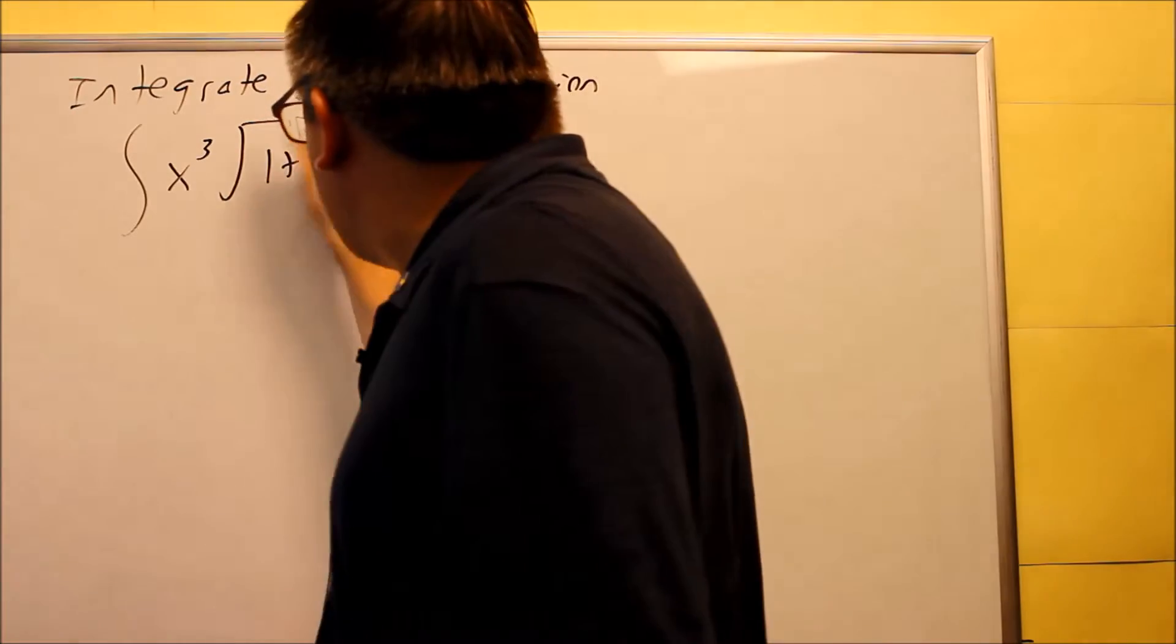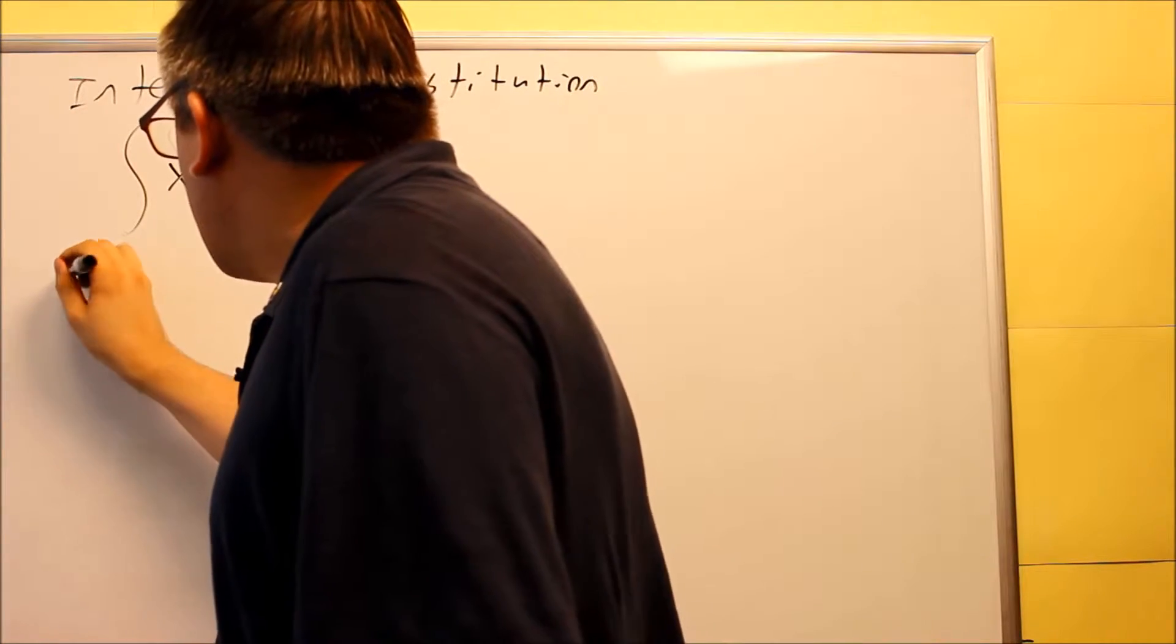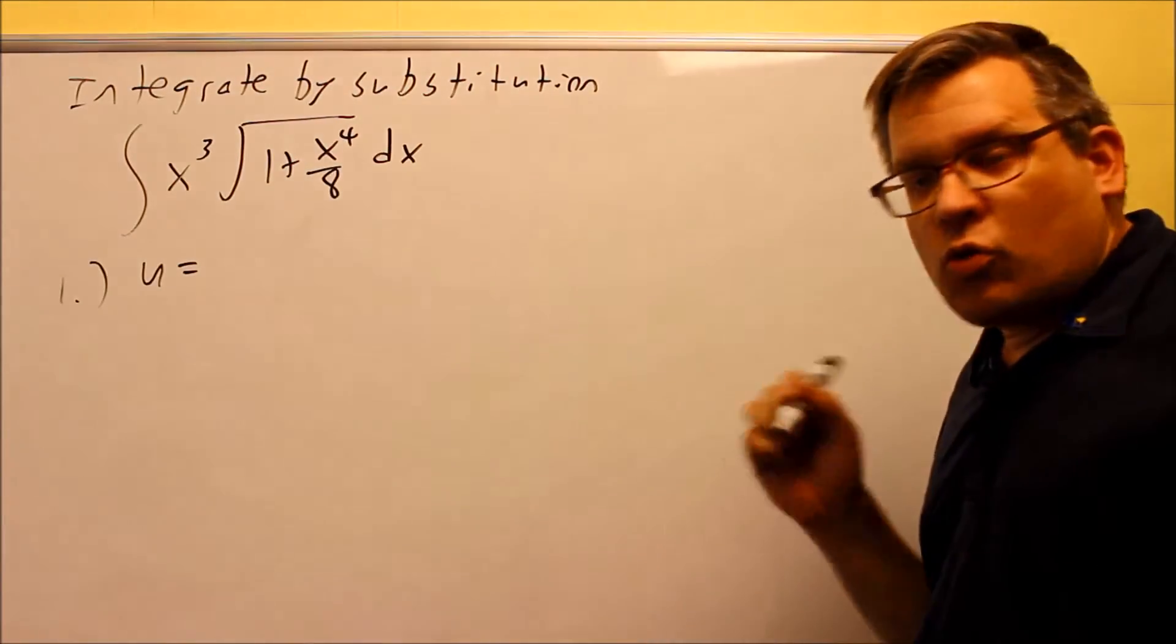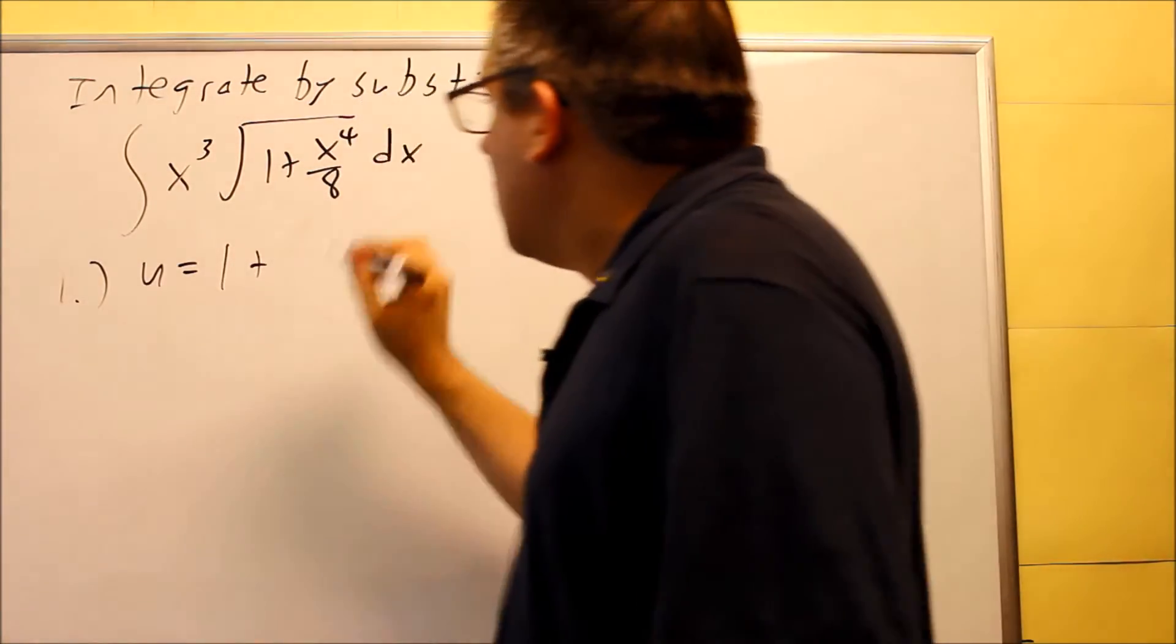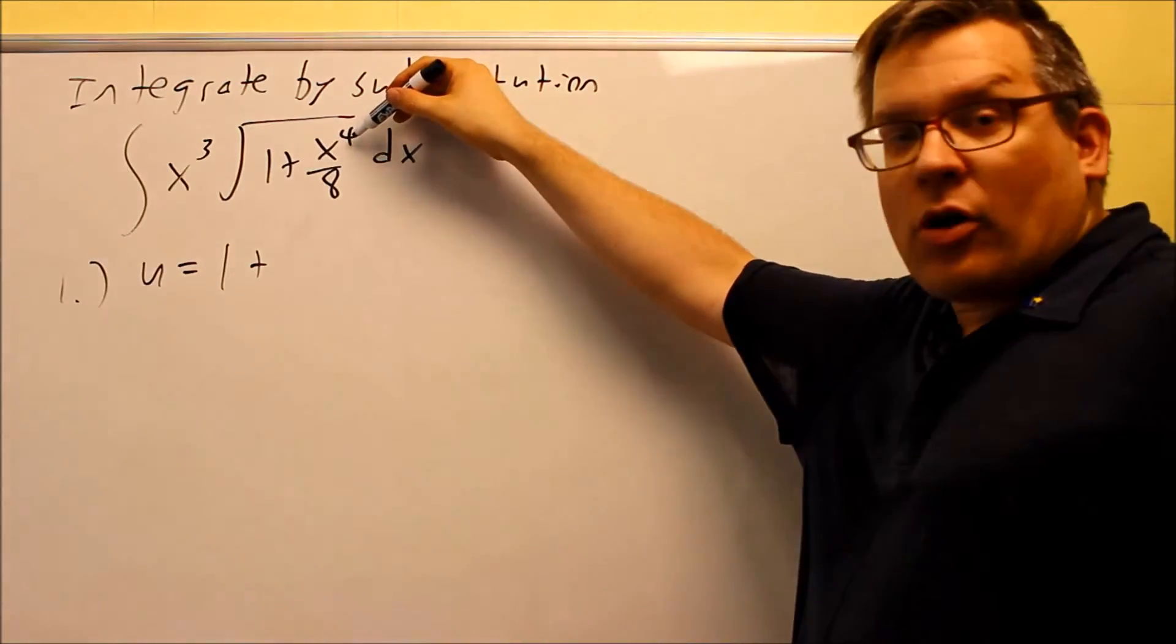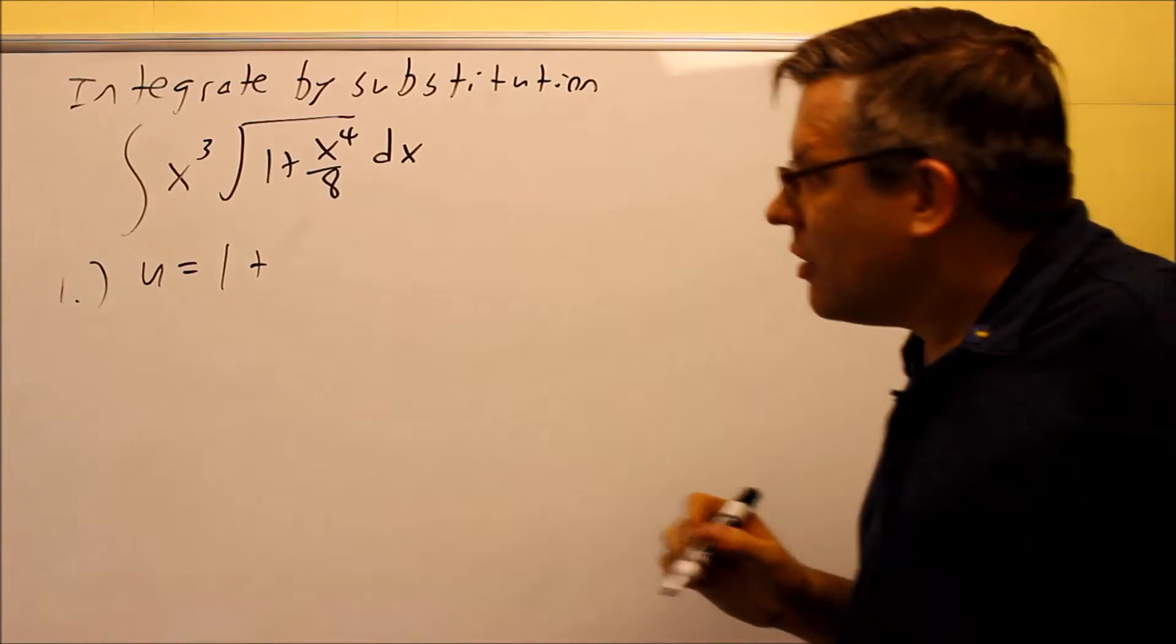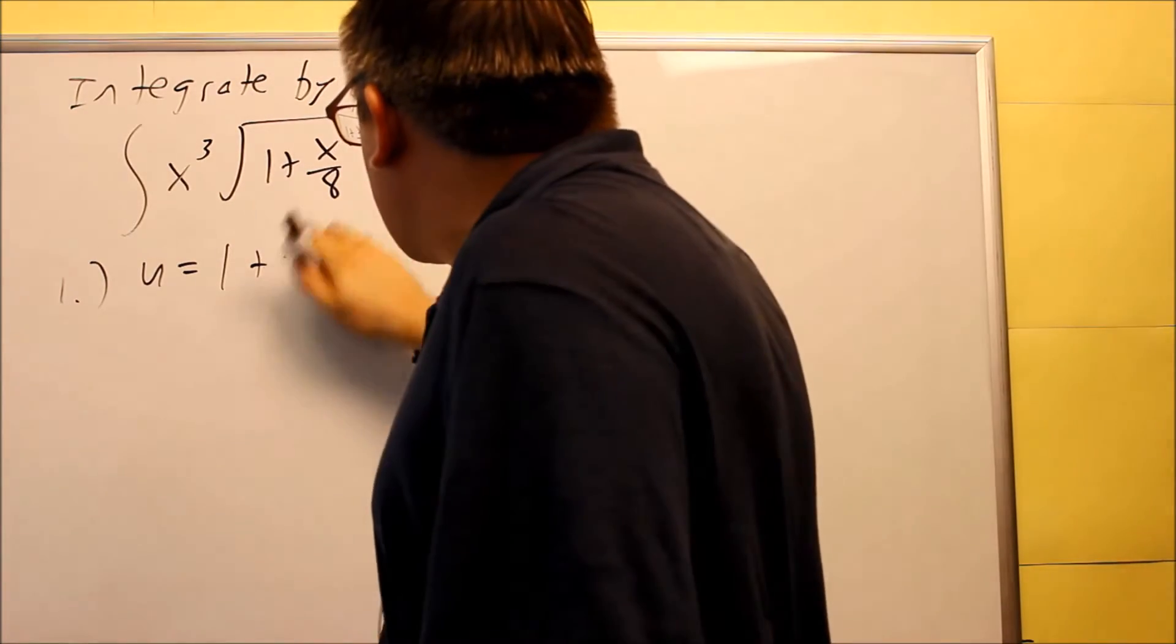So in this case, it's going to be on the inside of the radical, but in case it wasn't, that's another way you can tell what your u would be equal to. You want to pick the one that has the higher power, so that when you take the derivative to subtract one, you'll get the other one on the outside.